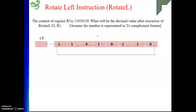Let's take an example. The content of register R1 is given. We need to find the decimal value after executing Rotate L by two bit positions on R1. We assume the numbers are in two's complement form, so since the MSB is 1, the number is a negative number — we will address that after performing the rotation.